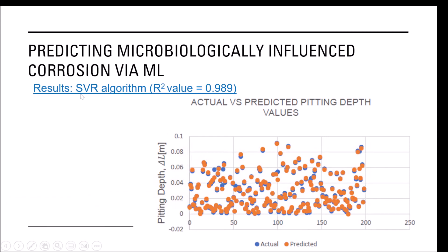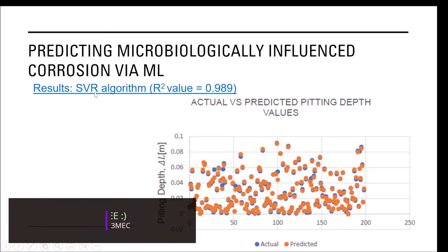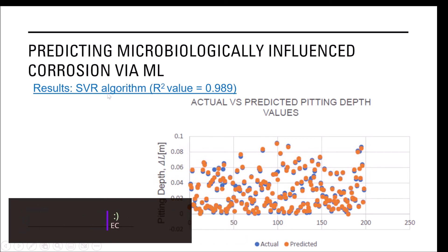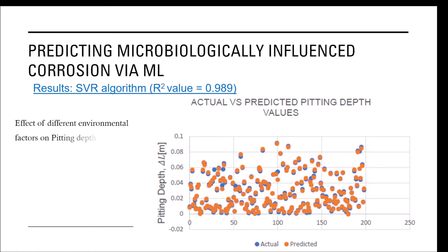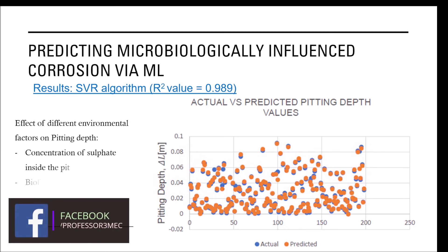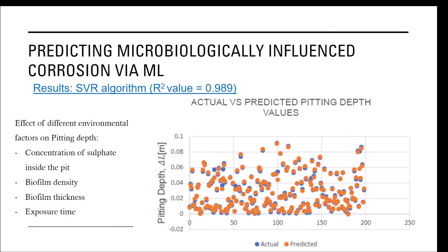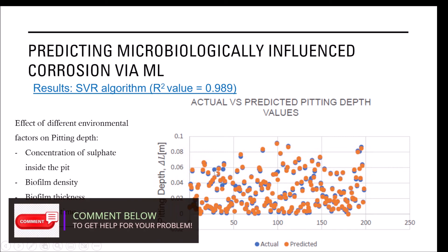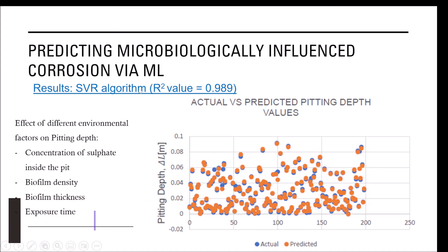In this case what we did, we used the support vector regression (SVR) which is a very simplified model along with other machine learning algorithms as well, and we were able to train this SVR algorithm. In this case the data you see on the screen is based on four different parameters or environmental factors which affect the pitting depth. Each blue dot is an experimental data or actual data, while all the other colors is basically the predicted data from SVR algorithm.